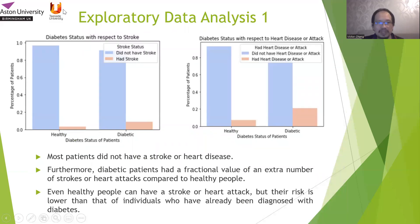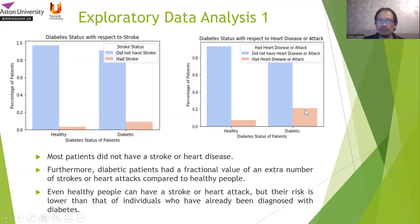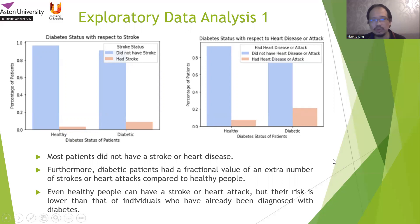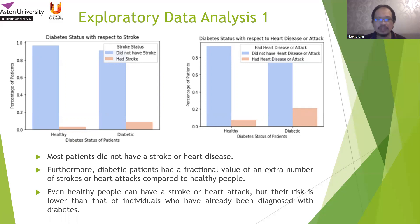The results show the diabetes status with respect to stroke. The healthy ones do not have stroke, though some will. Those with diabetes tend to have a higher response rate to stroke. Similarly, those with diabetes have very significant high values for heart disease or heart attack. Therefore, diabetes has a very direct correlation to heart attack. Most patients do not have stroke or heart disease, but diabetes patients had a higher number of strokes or heart attacks compared to healthy people. Even healthy people can have a stroke or heart attack, but their risk is lower than those already diagnosed with diabetes.